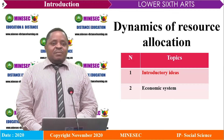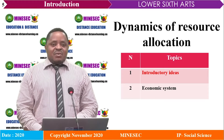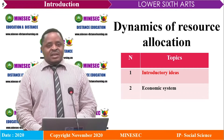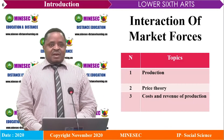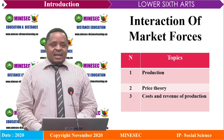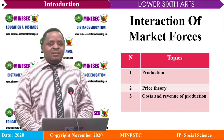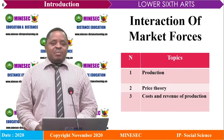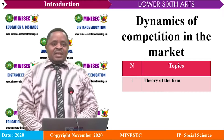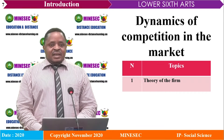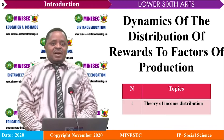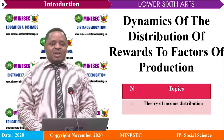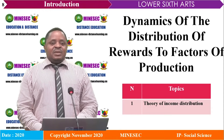The first module is dynamics of resource allocation, with two topics: introductory ideas and economic system. The second module is interaction of market forces, with three topics: production, price theory, cost and revenue of production. The third module is dynamics of competition in the market, with one main topic: the theory of the firm. The last module is dynamics of the distribution of rewards to factors of production, with one main topic: theory of income distribution.